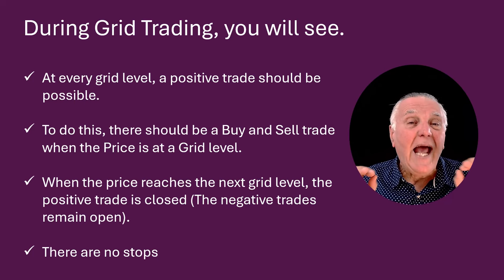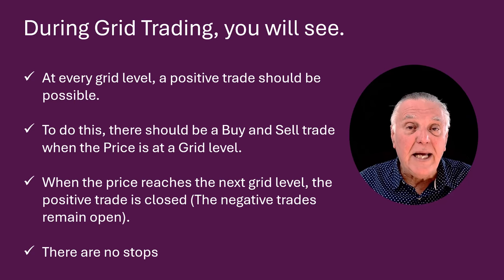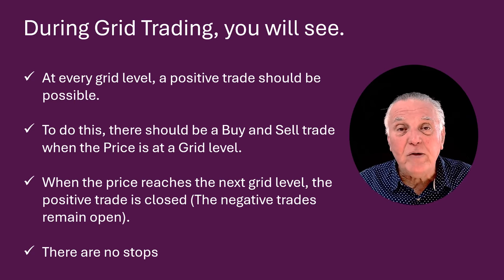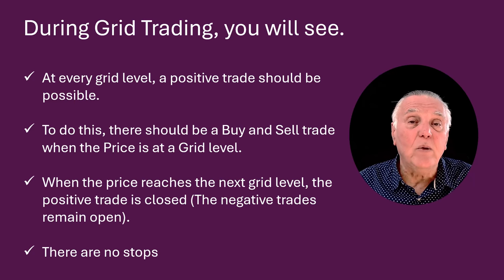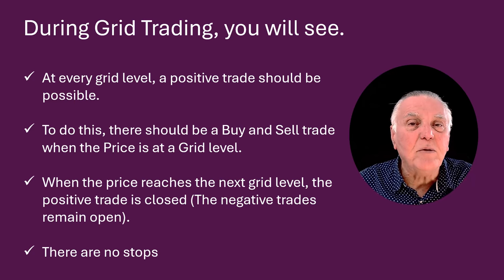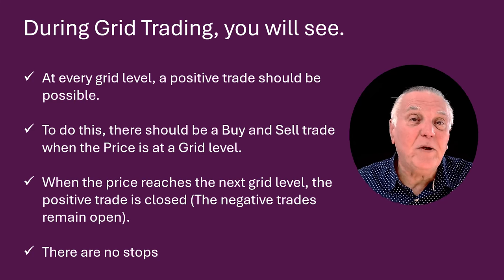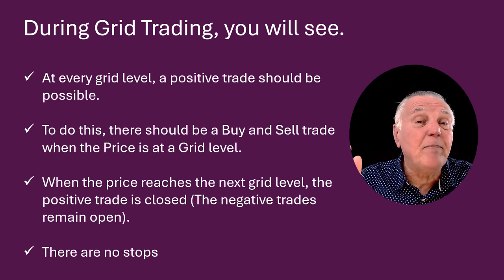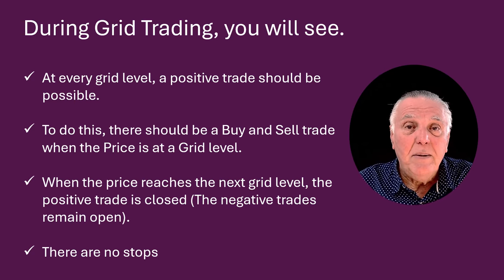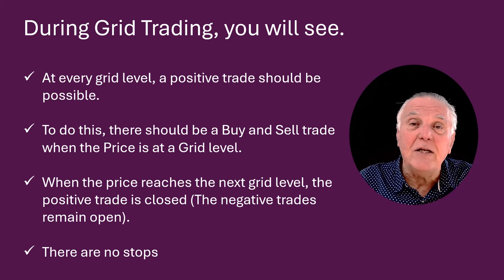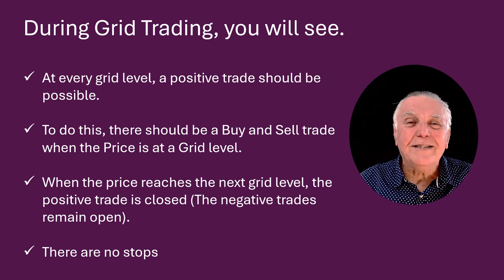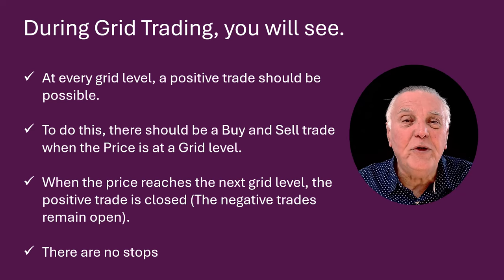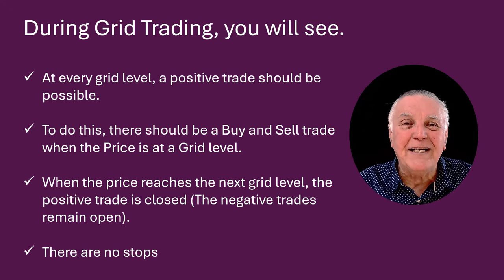To achieve this, you need to enter a buy and a sell at the grid level you're in. There might already be a buy or a sell — in which case you just top it up — but there should always be a buy and a sell at the current price level. When one of those transactions goes in a particular direction and reaches the next grid level, you cash that in and leave the other transaction open.